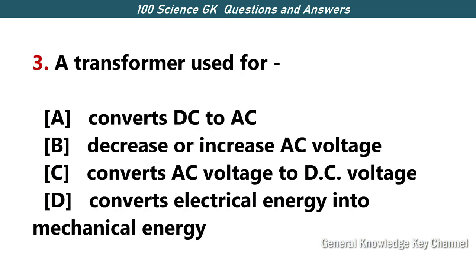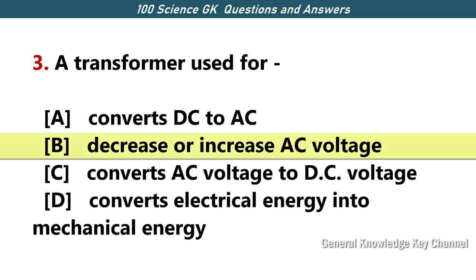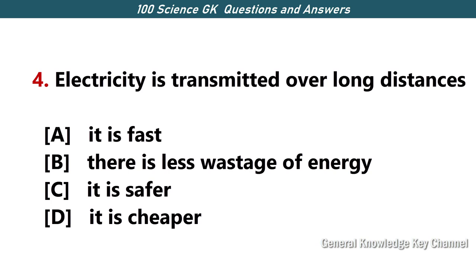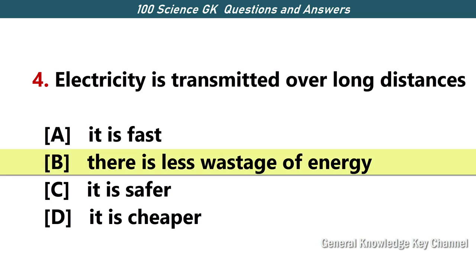A transformer is used for — Answer B — to decrease or increase AC voltage. Electricity is transmitted over long distances — Answer B — because there is less wastage of energy.